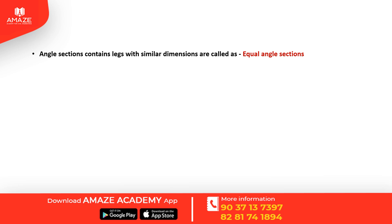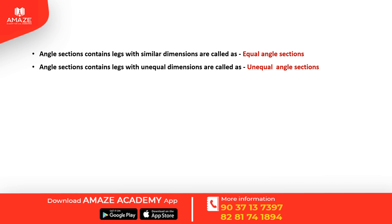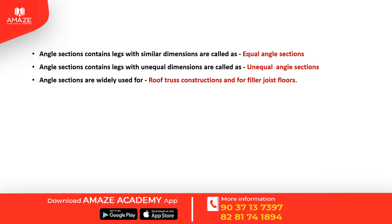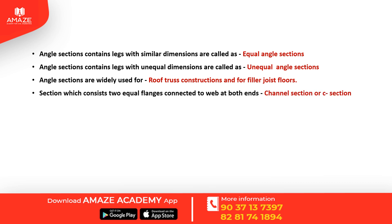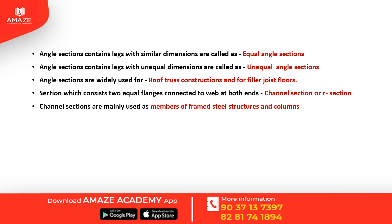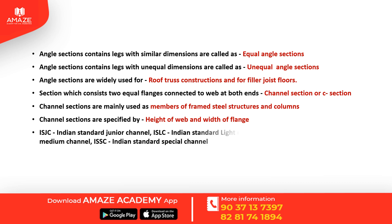Angle sections with legs of similar dimensions are equal angle sections; unequal dimensions are unequal angle sections. Angle sections are used in roof truss construction and filler joist floors. A section consisting of two equal flanges connected to a web at both ends is a channel section, mainly used in framed steel structures. Channel sections are specified by height of the web and width of the flange. The types are ISJC (Indian Standard Junior Channel), ISLC (Light Channel), ISMC (Medium Channel), and ISSC (Special Channel).